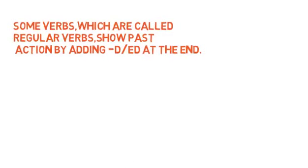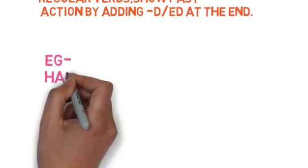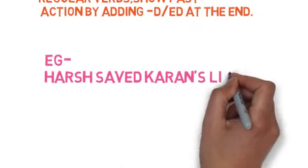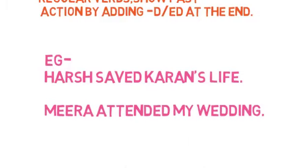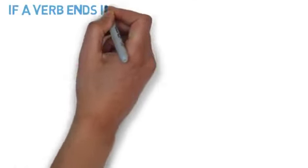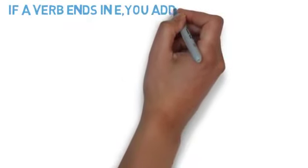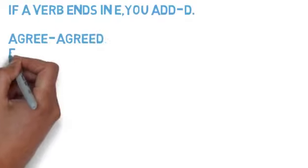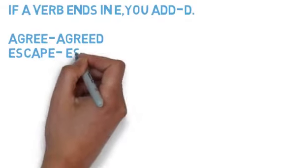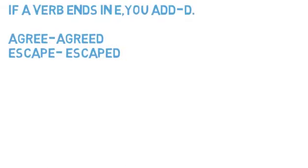Some verbs which are called regular verbs show past action by adding d or ed at the end. For example, if a verb ends in e, you add d. Example: agree - agreed, escape - escaped.